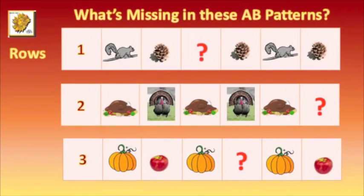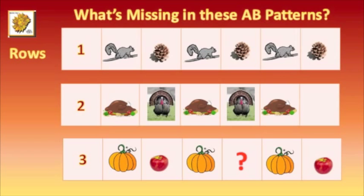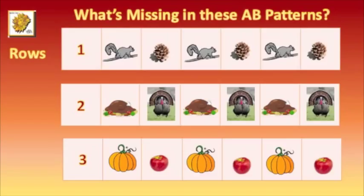Now, what's missing in these AB Patterns? Look at row one. The answer is squirrel. Look at row two. The answer is the gobble gobble gobble turkey. And three, the answer is an apple. Wonderful job.